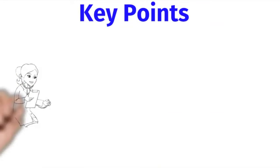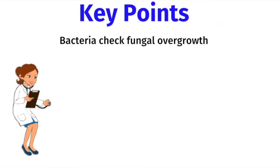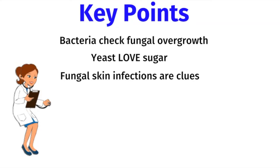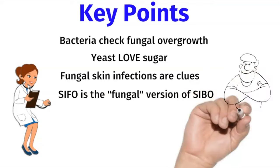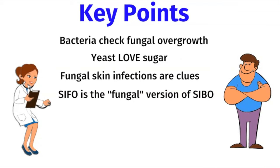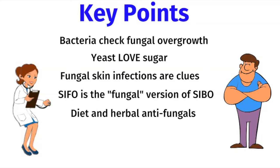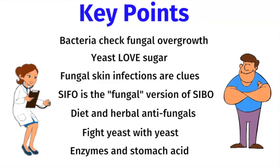Here are the key points. Throughout our body, the bacterial microbiome helps to check and prevent fungal overgrowth. Yeast and fungus love sugar. Fungal infections on the skin are clues to fungal overgrowth in the gut microbiome. SIFO is the fungal version of SIBO, but it can cause similar symptoms. We can treat Candida and fungal overgrowth by changing the diet and using herbal antifungal agents. The good probiotic yeast S. boulardii can be used to fight yeast with yeast. Finally, restoring your defense mechanisms — including digestive enzymes and stomach acid — can make a huge impact in treating fungal overgrowth and preventing recurrence.